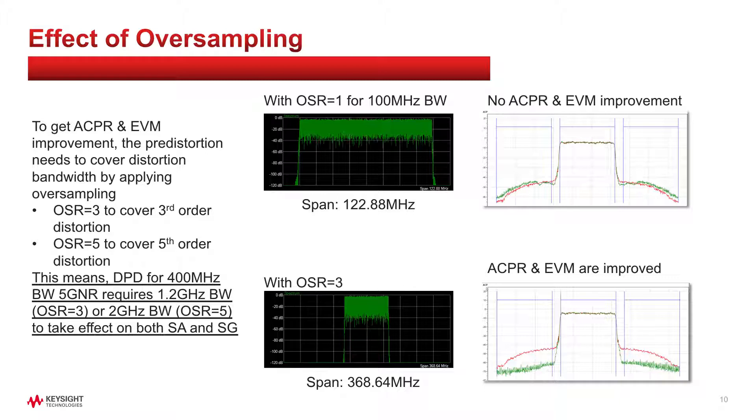In this example, we have 100 MHz bandwidth 5G NR waveform. The base sample rate is 122.88 MHz. Since there is no third order bandwidth coverage, the DPD doesn't improve ACPR performance.